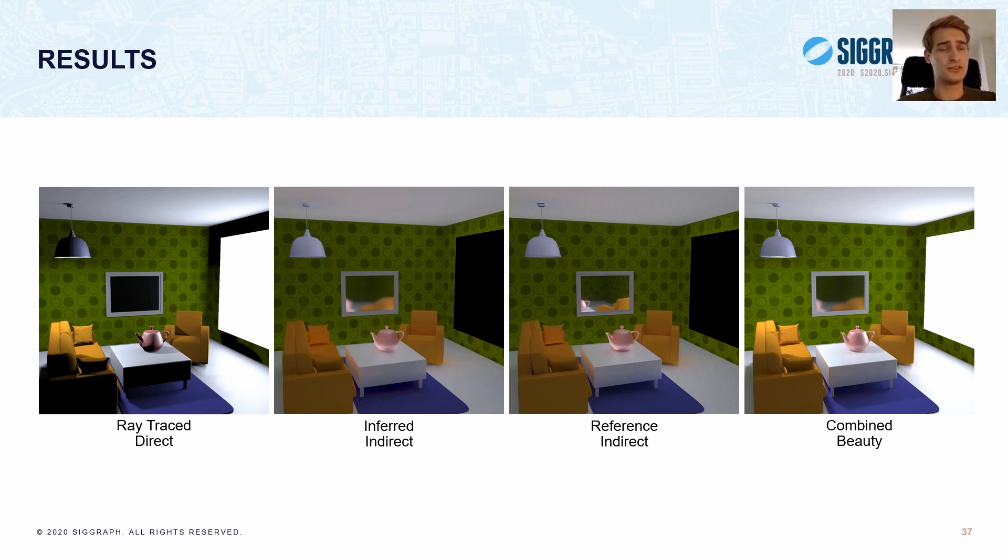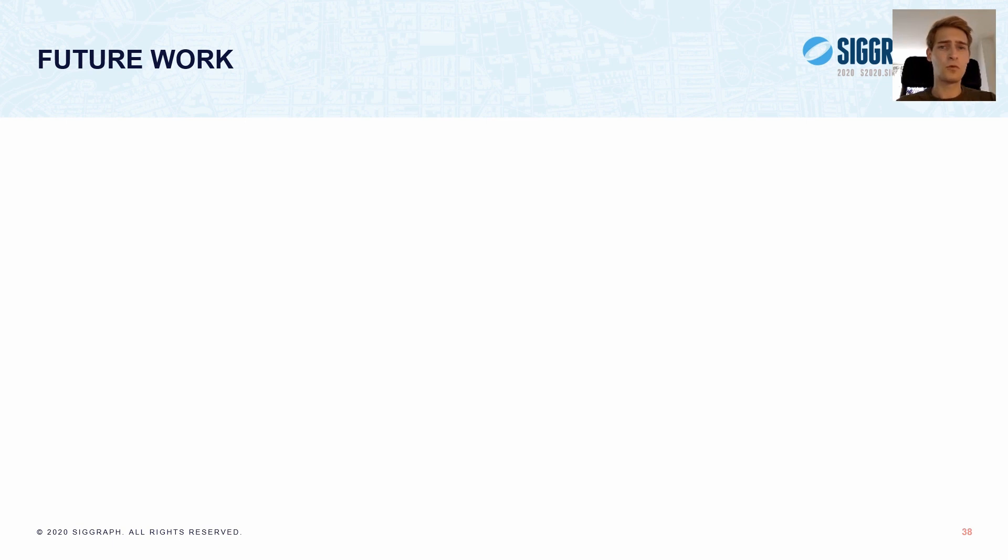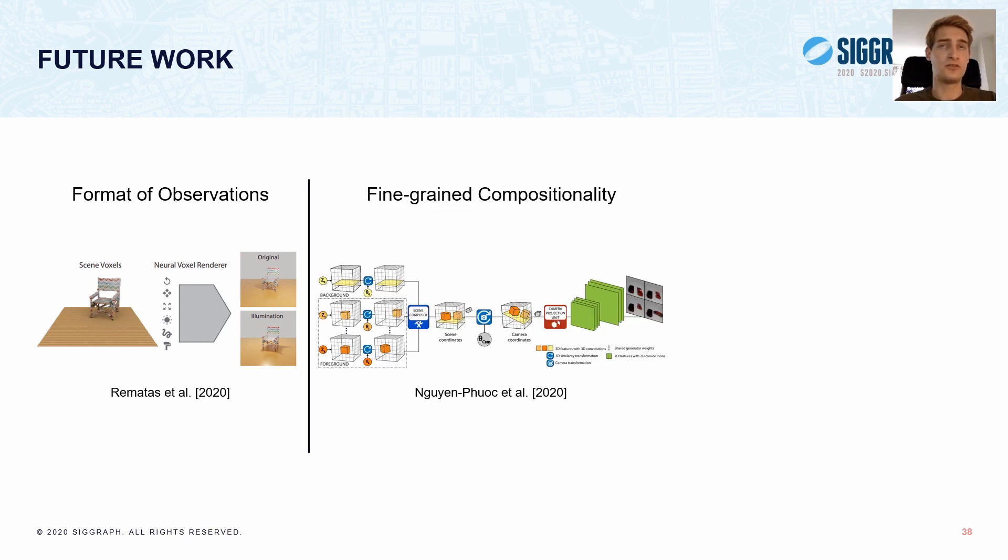So now we have seen some results, let's discuss future work. One obvious improvement that should probably be made is changing the format of the observations. We inherited the encoder network from Eslami and colleagues, but a voxel grid input might actually be better, like done by Ramanathan and colleagues. This is because these voxel representations contain information about the whole scene, which is generally not captured fully by a few random observations.